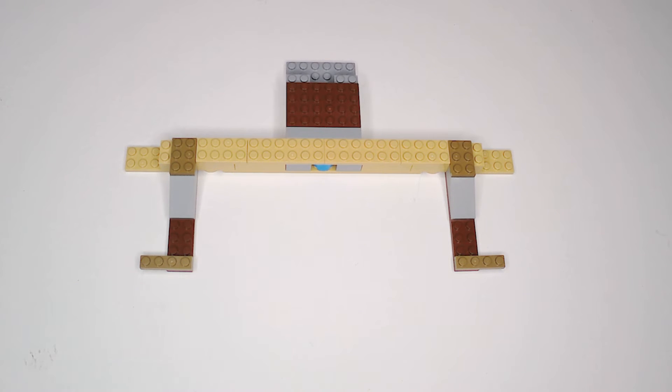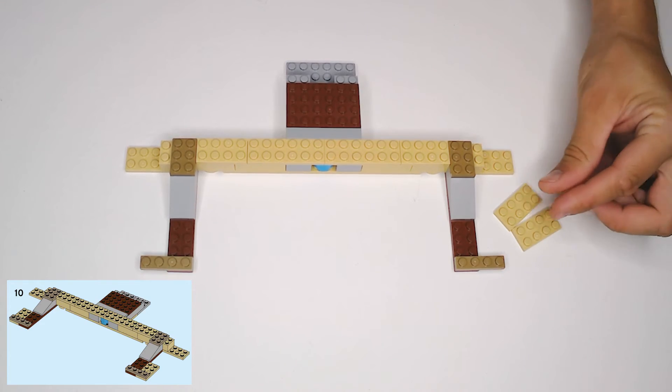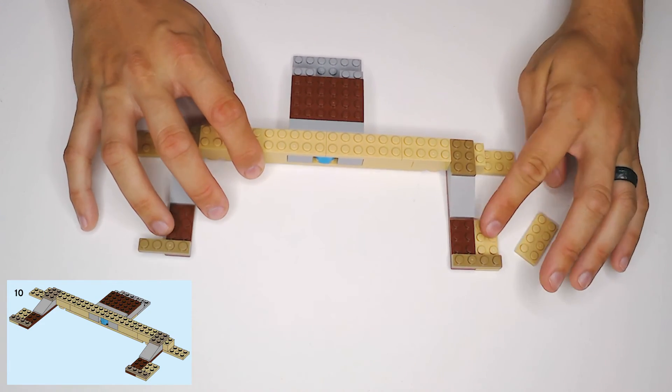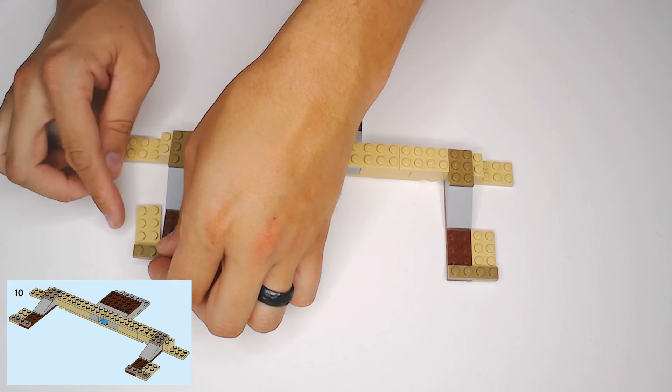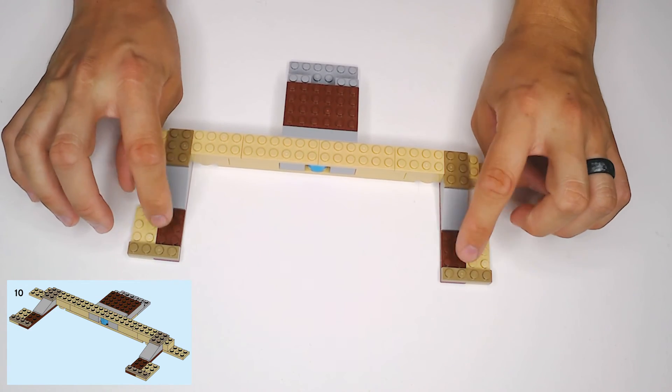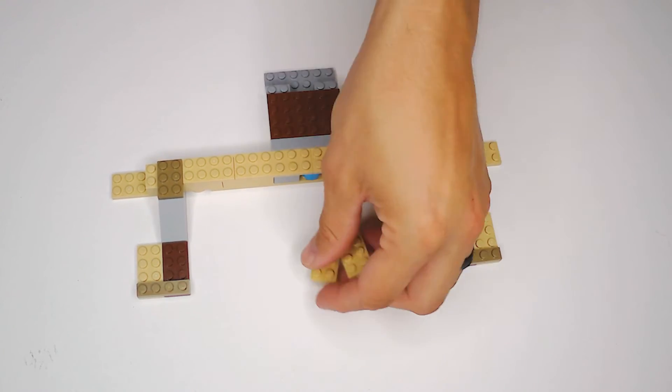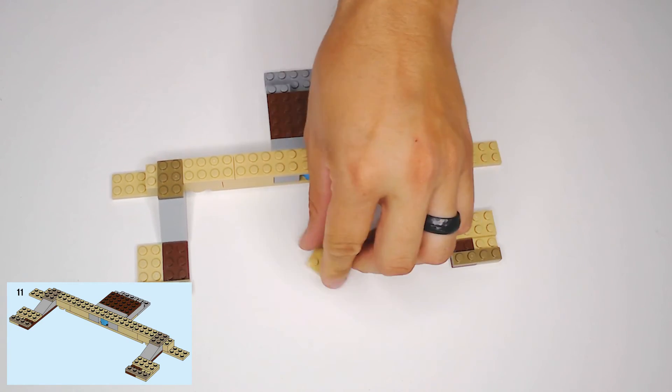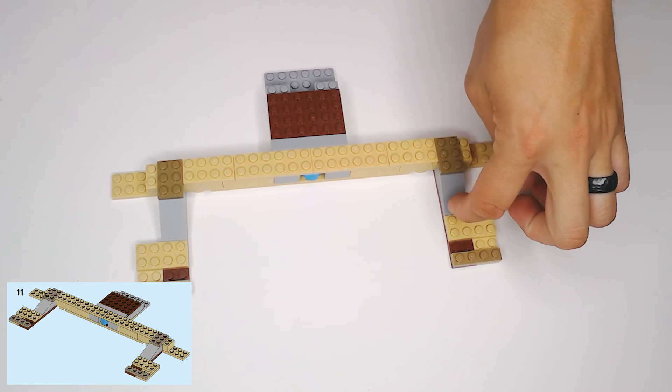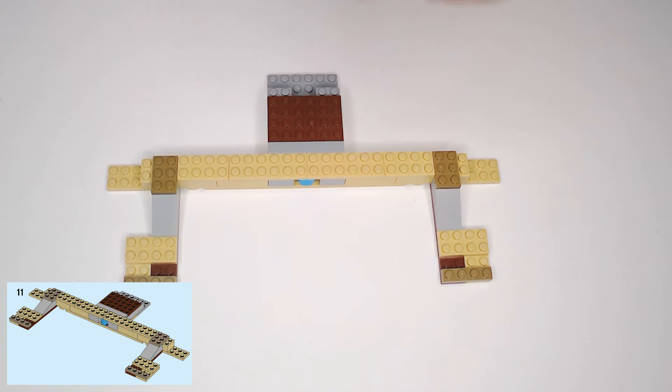Then in step 10, we need two more of these 2x4 tan plates. They're going to go underneath the other end of those dark tan 1x4s, again flush with the bottom so that they're going up alongside the brown plates. And then in step 11, another two of the tan 2x4 plates is going to go on top, kind of paralleling that dark tan 1x4, but they're flush up against the end of that light gray slope piece. Connecting the two plates underneath.